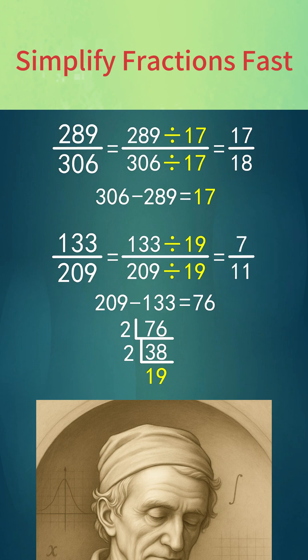Divide numerator and denominator by 19, and you get the simplest fraction, 7 over 11.